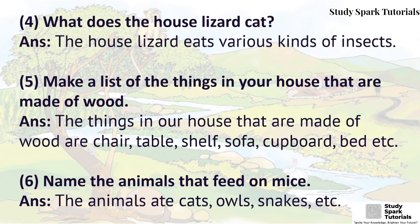Fifth: Make a list of things in your house that are made of wood. Answer: The things in our house that are made of wood are chair, table, shelf, sofa, cupboard, bed, etc. Sixth: Name the animals that feed on mice.